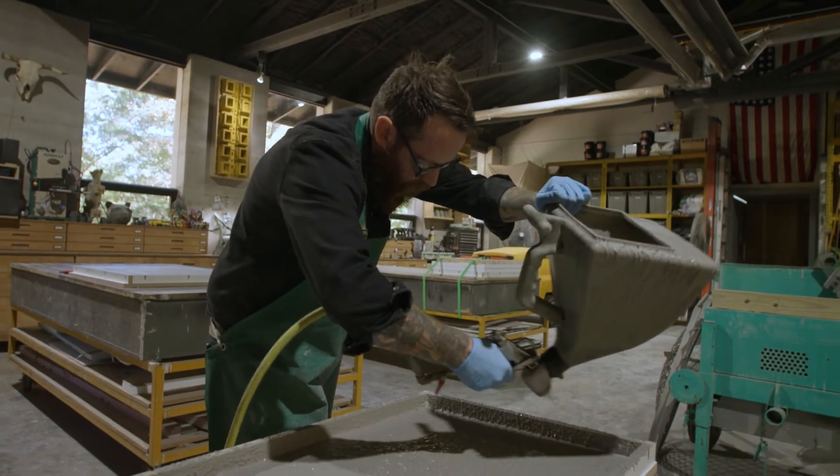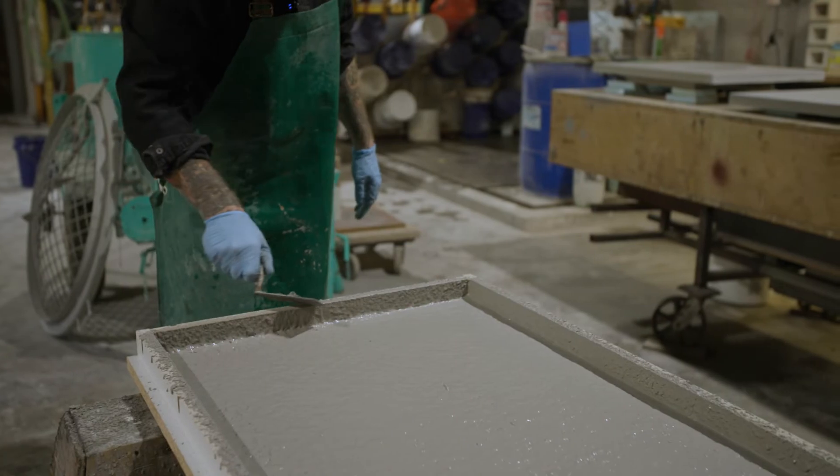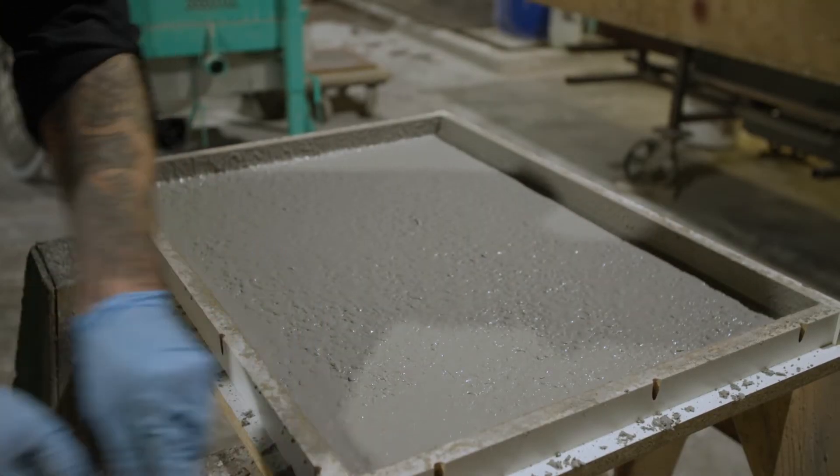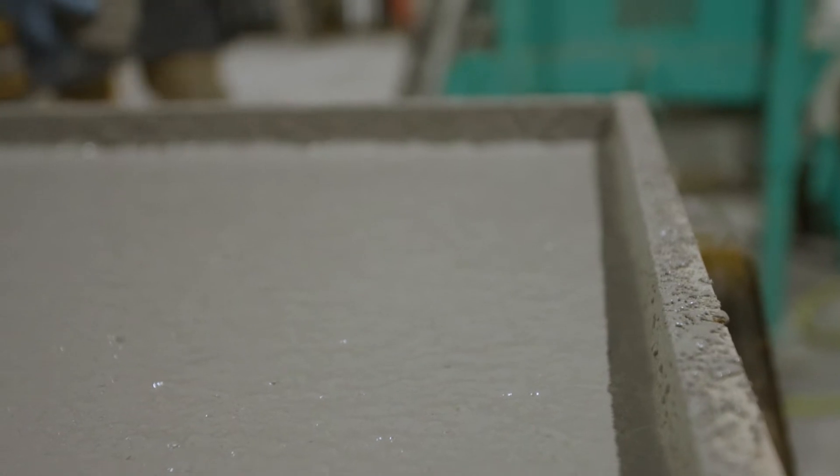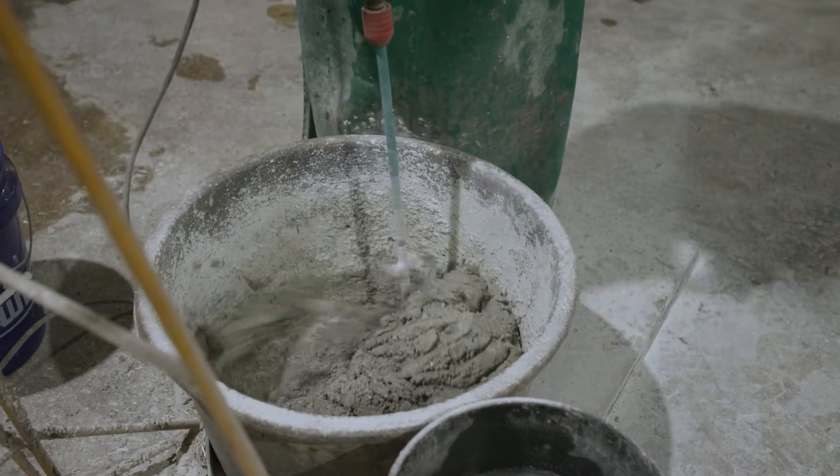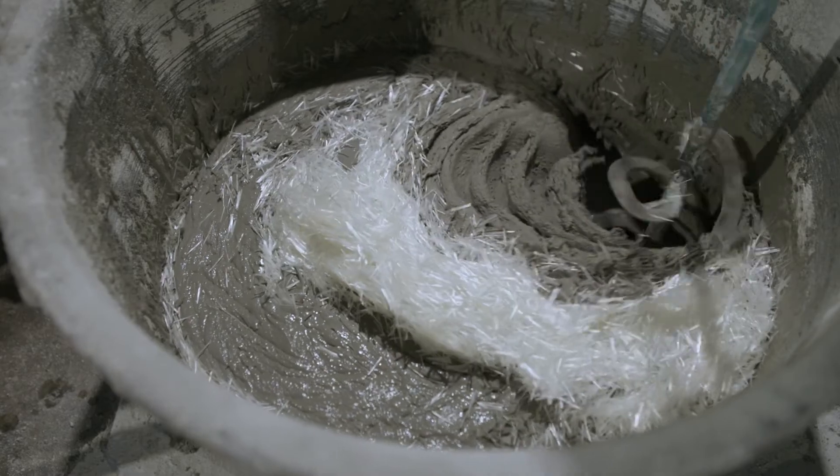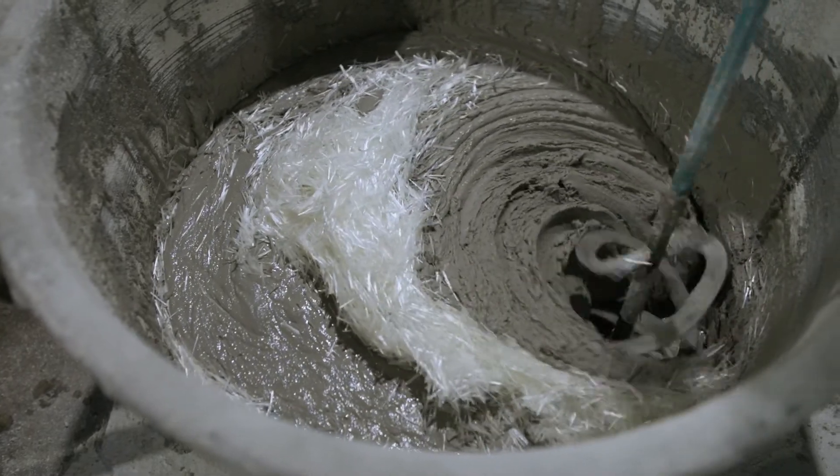Allow the face coat to firm up before pouring in an SCC backcoat. Although not shown in this video, the way you know it's ready is you can touch the face coat without it sticking to your glove. Mix the SCC backcoat the same way as a sprayable mix. The only difference is you'll add air glass fibers after the mix has slaked.